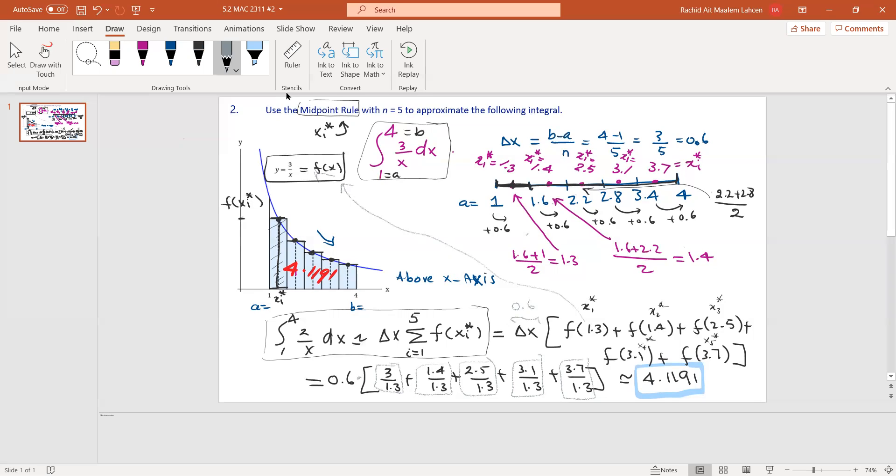This is how the midpoint rule works, and you can try different examples. You can try it for, let's say, x squared between 0 and 1, or 0 and 2. Of course, the more partitions we have, the better calculation we will have. Thank you.